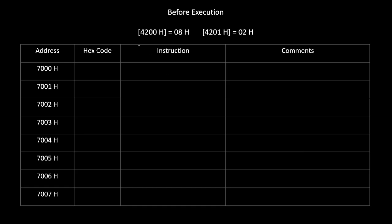Now let's write the program. Before execution, content of 4200H is 08H and content of 4201H is 02H. We will start our program from 7000H. Our first instruction is LDA 4200H, which stands for load accumulator. We will load the accumulator with the content of 4200H. Since content of 4200H was 08H, that value gets loaded into the accumulator.